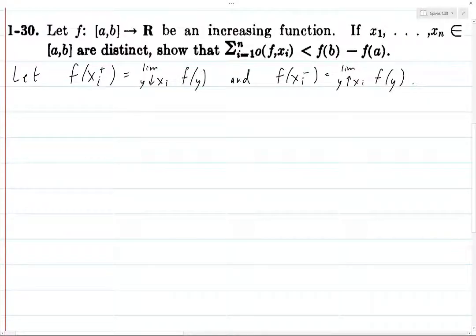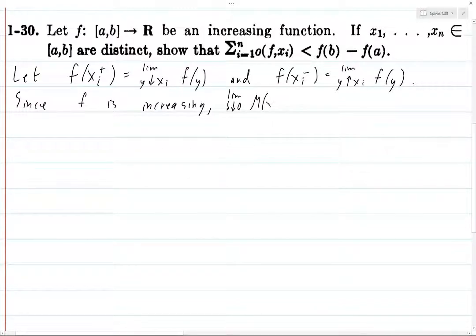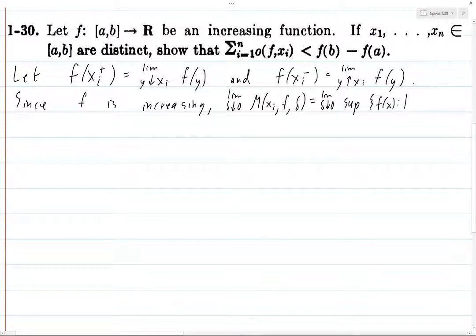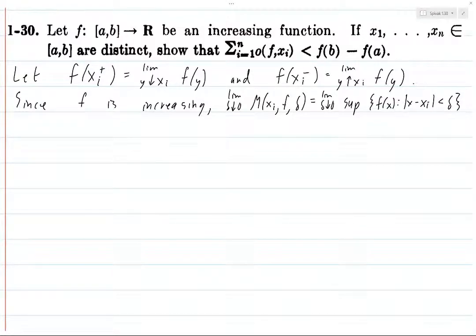Since f is increasing, we look at the limit as δ goes to zero of M(x_i, f, δ). This is the supremum of all f(x) such that |x - x_i| < δ. This is just the definition of capital M(x_i, f, δ), and when we take this limit it's sort of a limit-sup type of thing from the right.